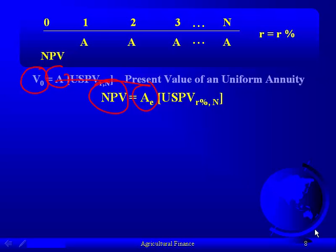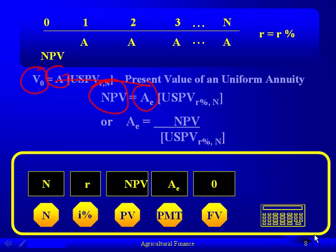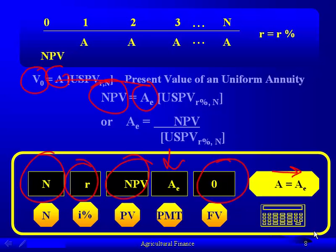This is essentially what you've been doing for a month. If you link it in your mind, what we're covering here is very easy. In fact, it's the same thing you did when calculating a loan payment — your calculators are well-equipped to do it. Mathematically, we solve for the annuity equivalent by dividing the net present value by the USPV factor. On the calculator: enter N as the life of the investment, R as the discount rate, PV as the net present value, zero out the future value, then compute the payment — and that payment becomes the annuity equivalent.